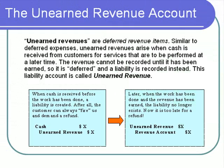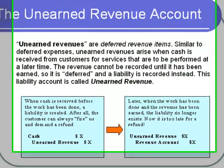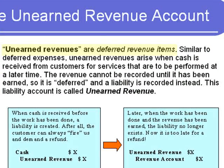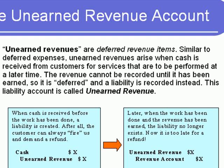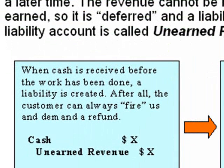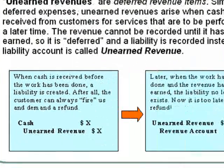In addition to making adjusting entries for deferred expense items such as supplies, prepaid insurance, and equipment, we must also make adjusting entries for deferred revenue items. Deferred revenues are called unearned revenues. Under accrual basis accounting, revenue is recorded only when it has been earned. Unearned revenues arise from situations where customers pay cash in advance for services that will be performed later. Since the work has not yet been done, the revenue cannot be recorded, so we defer recognition by recording a liability called unearned revenue instead.